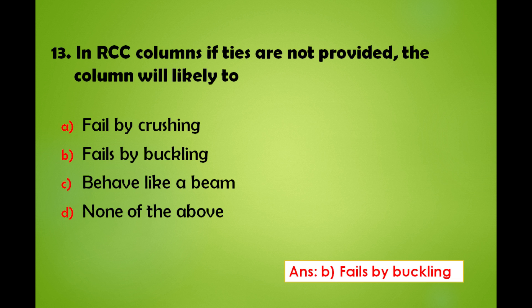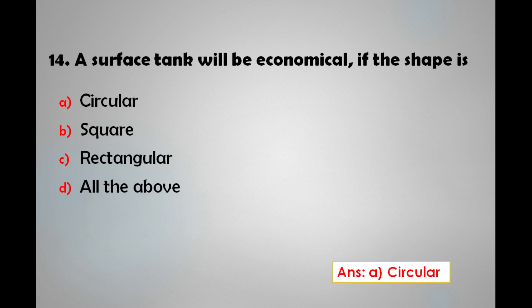In RCC columns, if ties are not provided, the column will likely: A) Fail by crushing, B) Fail by buckling, C) Behave like a beam, D) None of the above. The answer is: in RCC columns, if ties are not provided, the column will likely fail by buckling.